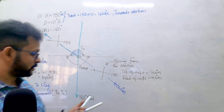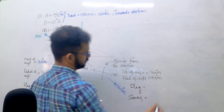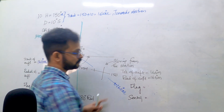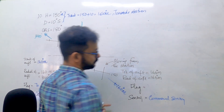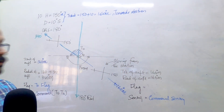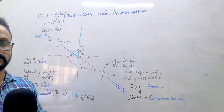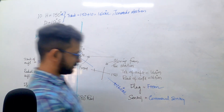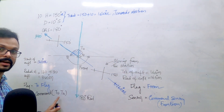What about the other case - the flag and CDI indication? We are on the head side, which is the from side, and going away from the station. So again it's command sensing, and the flag is a FROM flag. It's command sensing because we are on the front side and moving from the station.